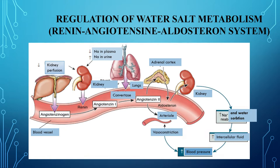As a result of decreased volume of circulating blood, volume receptors located in the atria, on the inner surface of the carotid artery and brain are irritated, and impulses enter the hypothalamus, then the pituitary gland. An increase in adrenocorticotropic hormone secretion leads to increased aldosterone synthesis in the adrenal cortex. In the regulation of aldosterone secretion, the renin-angiotensin system plays an important role.